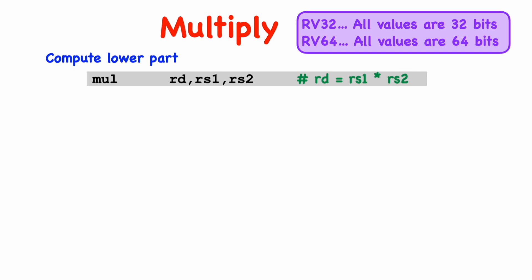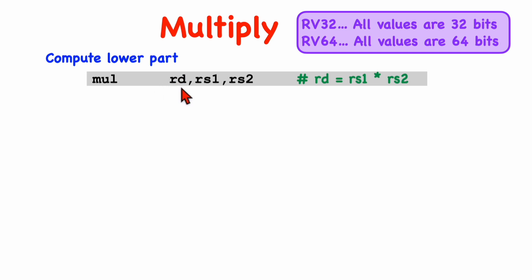For example, if we're multiplying two 32-bit numbers, we have a 64-bit result, which is not going to fit into a register. And likewise, if we've got an RV64 machine, all of the registers contain 64 bits, and our result is 128 bits. So we're going to have to use a couple of different instructions to get the entire result. The first instruction to look at will compute the lower half of the result — it multiplies two numbers and stores the lower half of the result in the destination register. For example, if we're multiplying two 32-bit numbers on an RV32 machine, we get the lower 32 bits of the result and move that into the destination register.